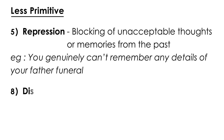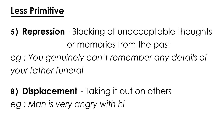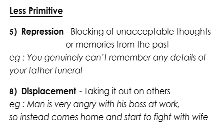The next less primitive defense mechanism is displacement — a classic example of taking it out on someone else. For example, a man is very angry with his boss at work but can't take it out on his boss because he'll lose his job, so he comes home and starts a fight with his wife, or gets angry with his kids. It's a classic example of redirecting anger or frustration onto somebody else.